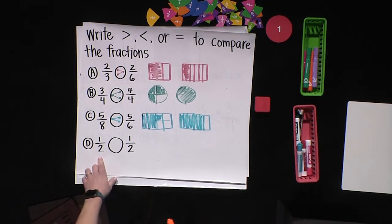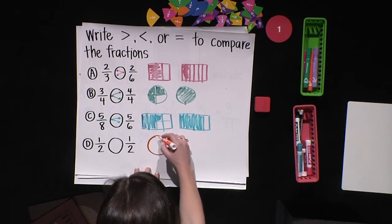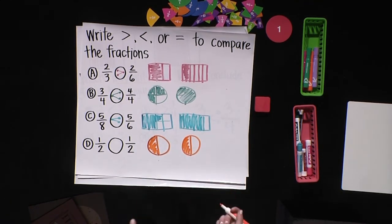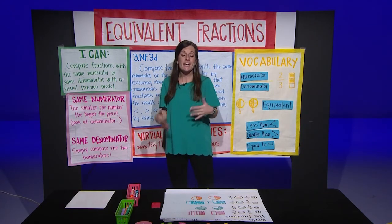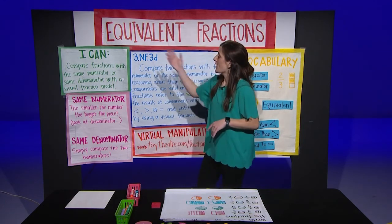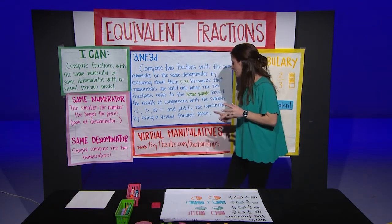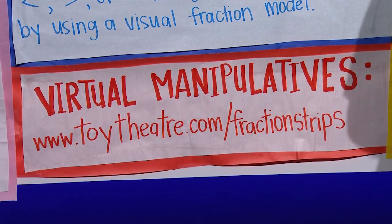Now for the last one. It tells us one-half blank one-half. Boys and girls, if we have the same fraction on both sides, there's no need to even draw a model, though Ms. Caldwell's going to anyway because her students know better. If I have one of two shaded here and one of two shaded here, with the wholes being the same size, those are going to be equal to. I hope that today you'll be able to remember: when you have fractions with the same numerator or the same denominator, compare the inequalities and decide if they are less than, greater than, or equal to. Your I can statement says: I can compare fractions with the same numerator or same denominator with a visual fraction model. At home you have your virtual manipulatives to practice yourself — grab a sibling or a parent and get to work on finding those equivalent fractions. Thanks again. Bye.